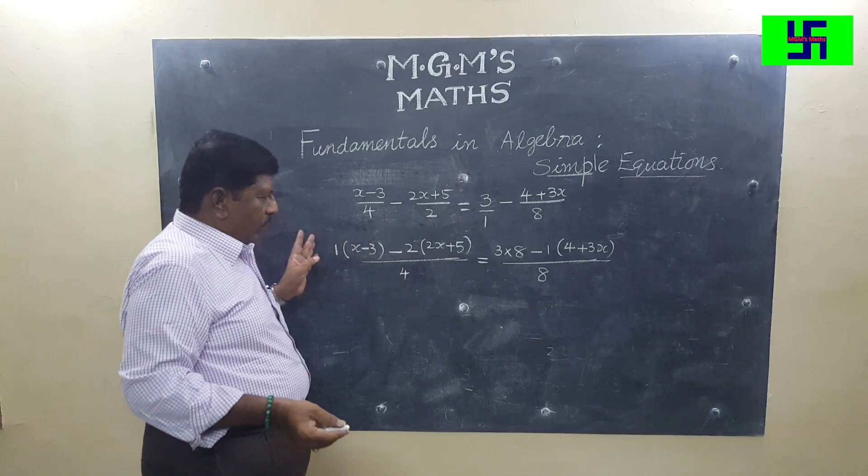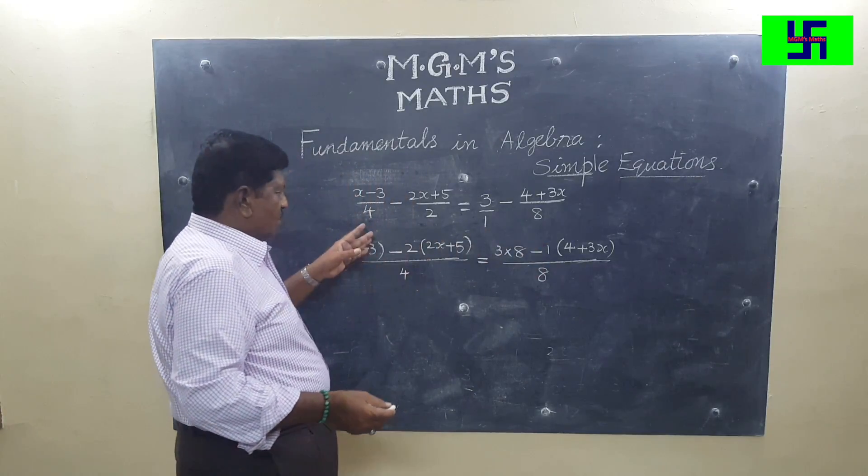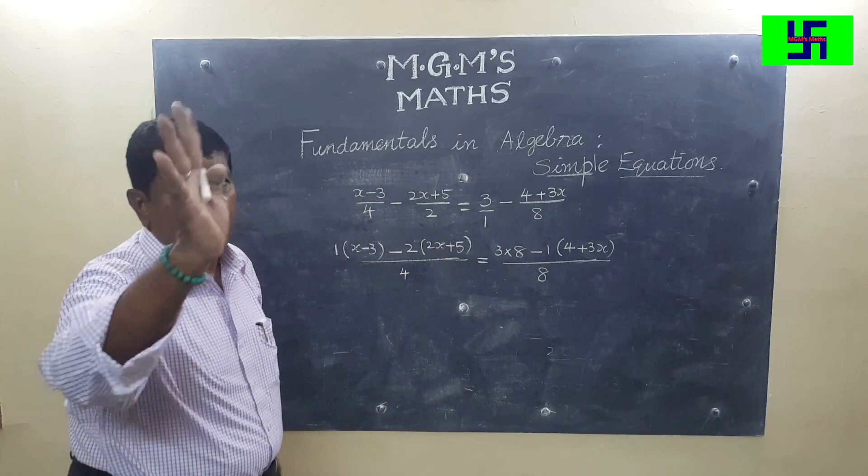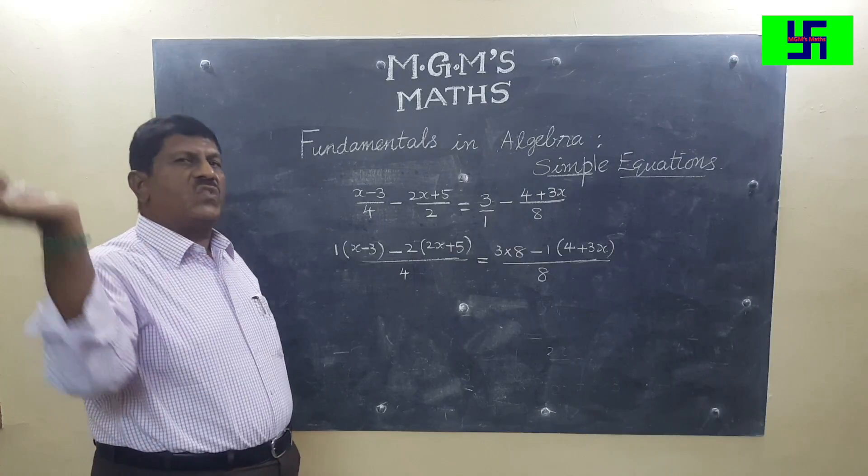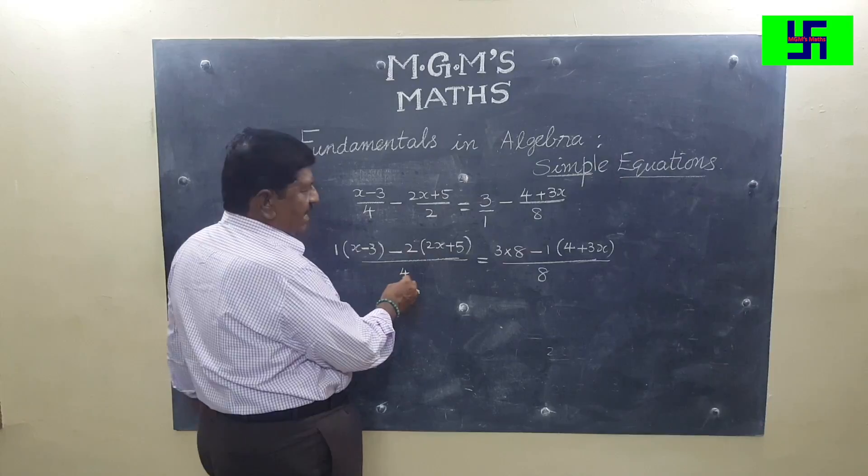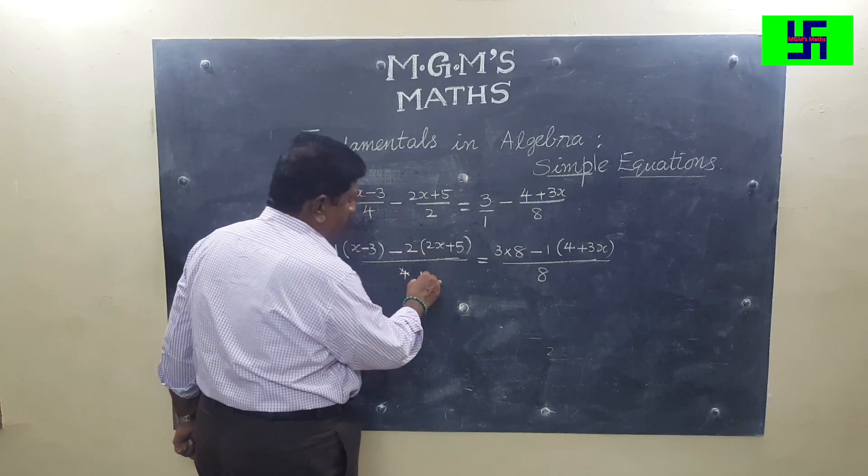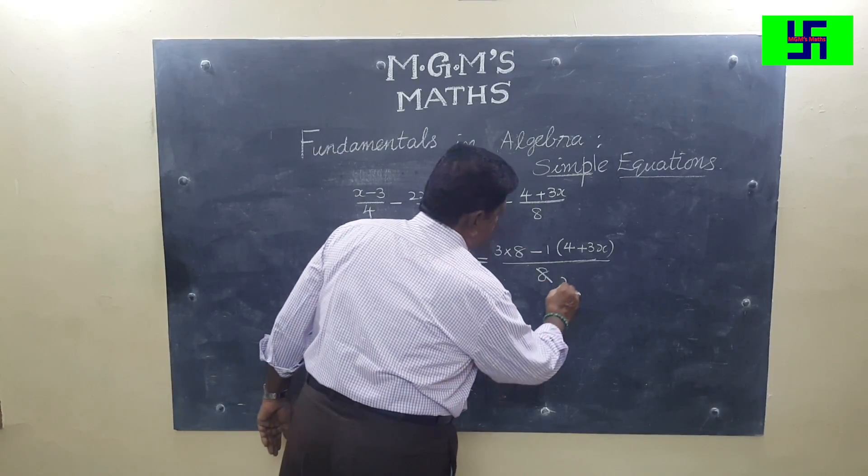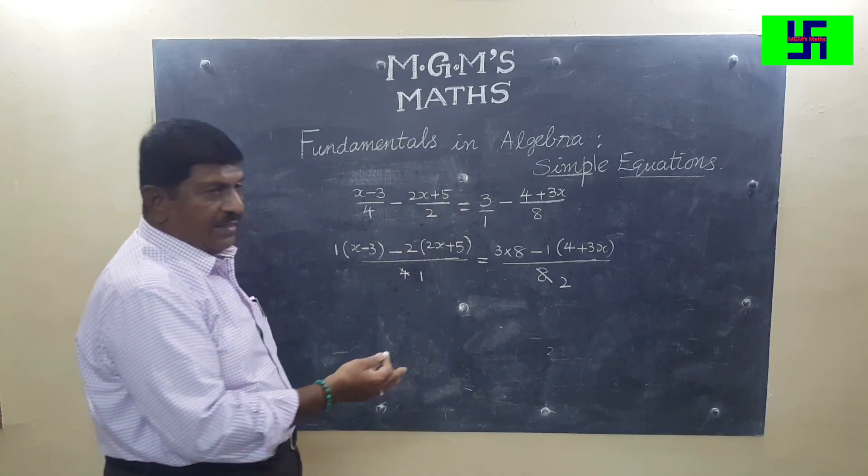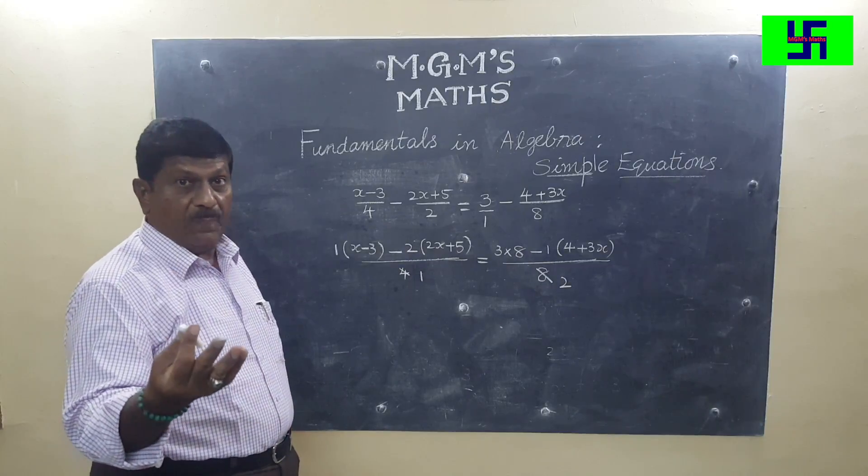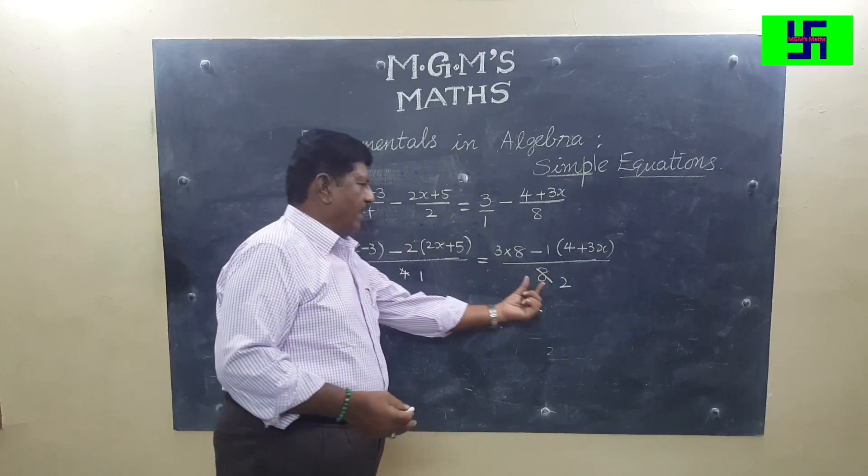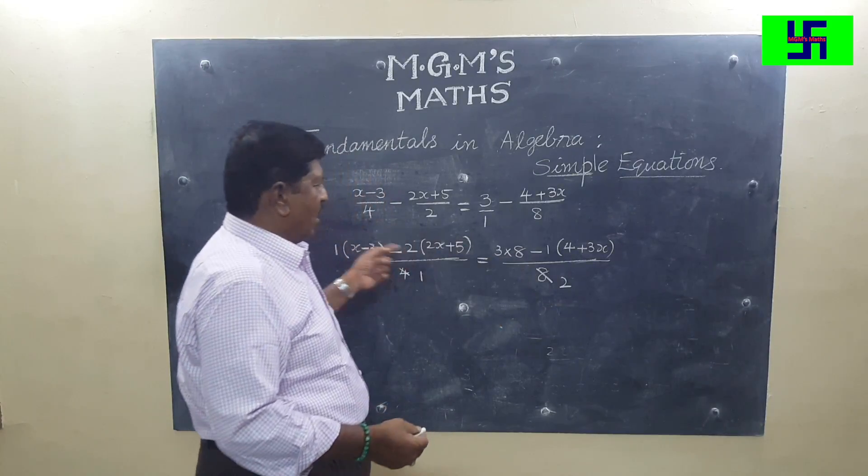Now you can cross multiply this numerator with the denominator, this numerator with this denominator. There is one more shortcut method. We can cancel equal quantities. 1 times 4 is 4, 2 times 4 is 8. Equal quantities can be added, subtracted, multiplied or even divided. So I divide by 4. Now you can cross multiply.